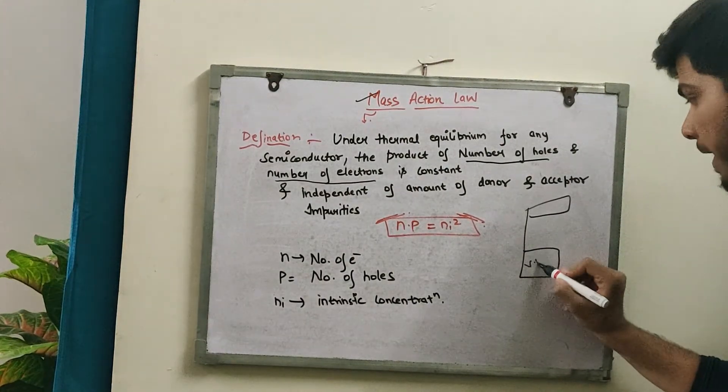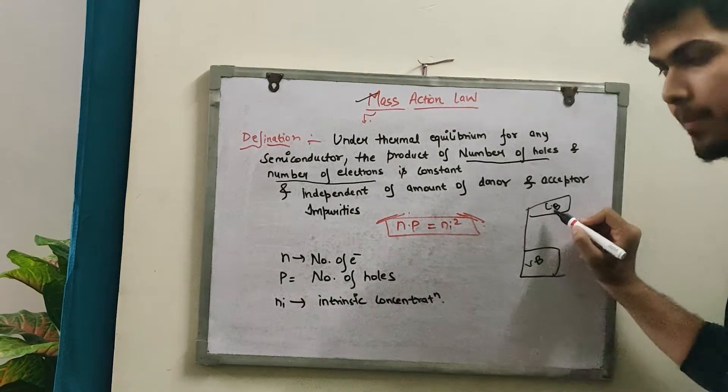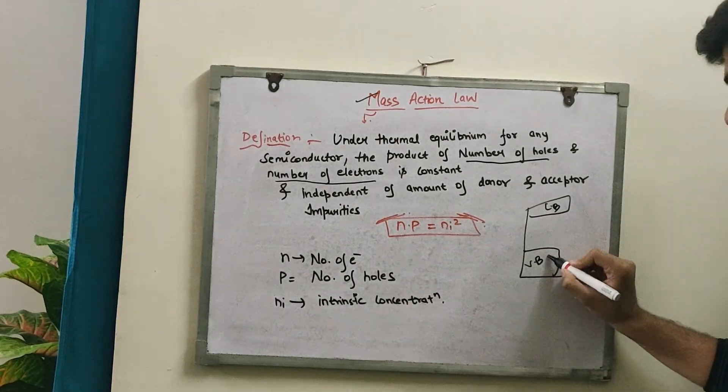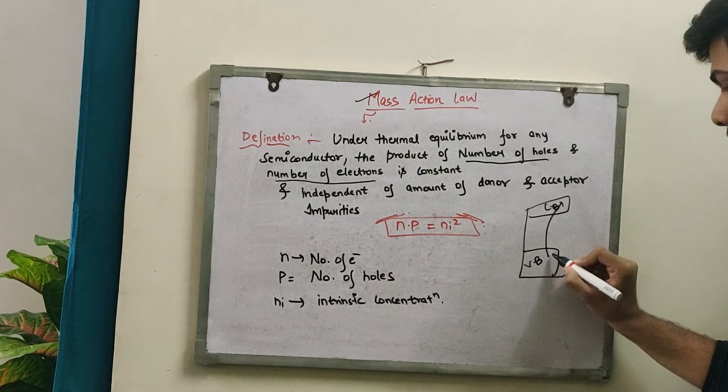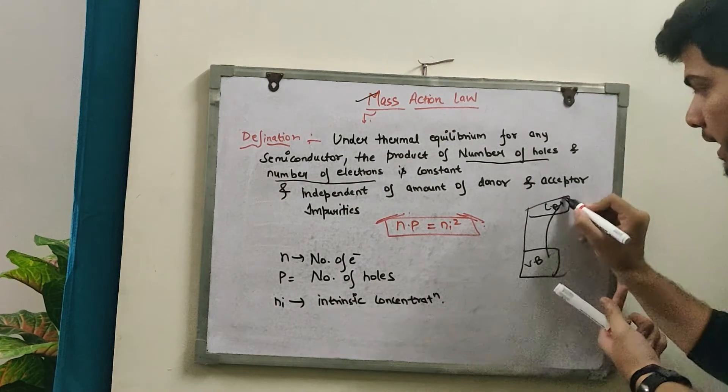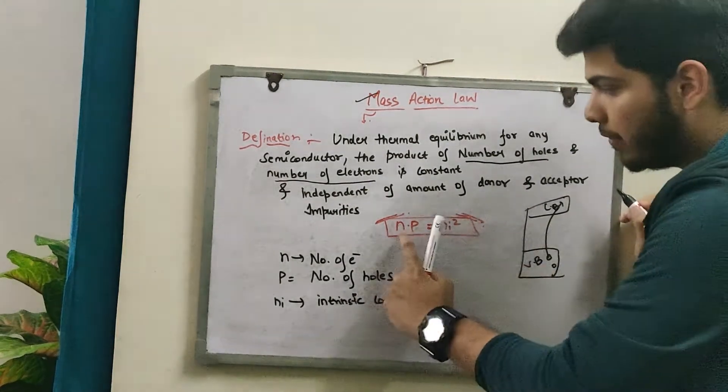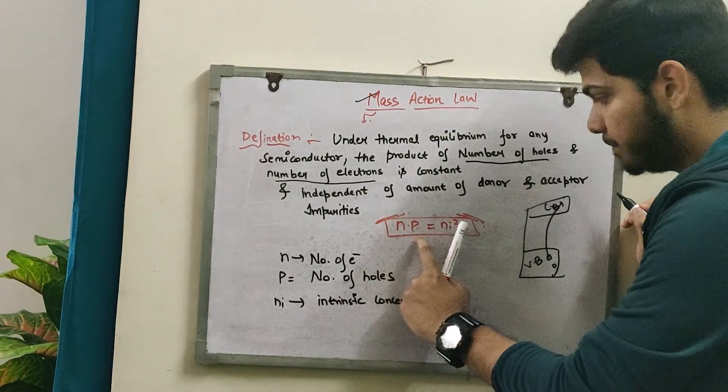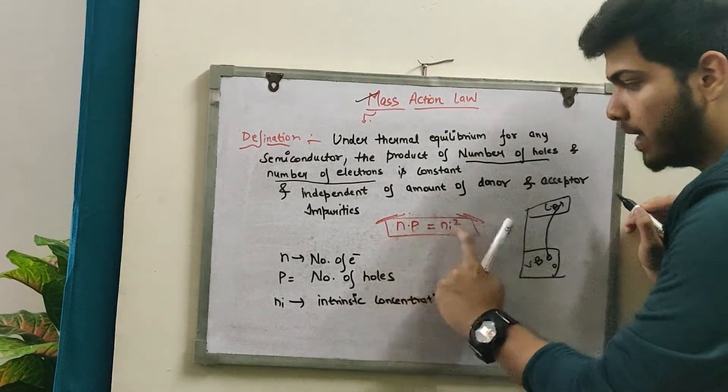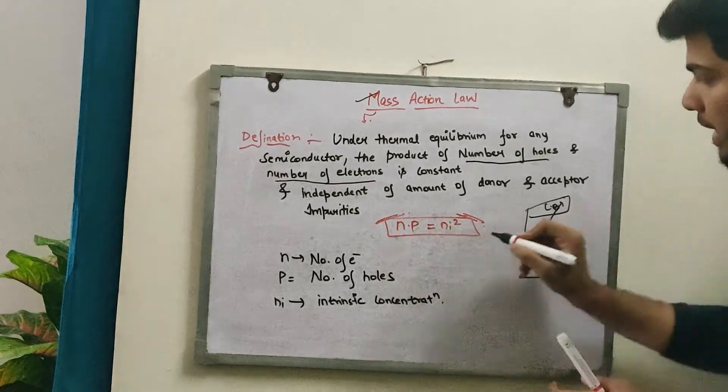Here we have a valance band and conduction band for intrinsic semiconductors. We saw that electrons were jumping over here, so the number of holes was created. That means the number of holes and number of electrons were the same.